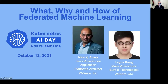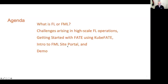Both Lane and I work at VMware and are involved in machine learning and artificial intelligence initiatives within the organization. We are also involved — Lane more deeply than I — in FATE, which is one of the many ways you can realize federated AI. FATE is an open source project and is discussed in this presentation. In this session, we'll cover federated machine learning at a conceptual level before looking at FATE broadly, followed by a demo. We have been working on the FML Site Portal, and Lane will take you through a demonstration of that also.